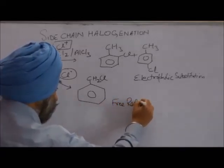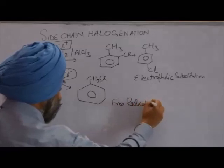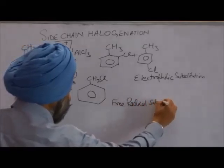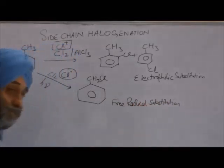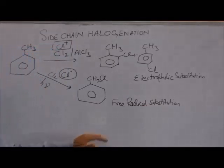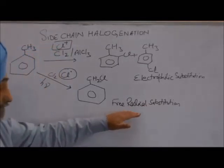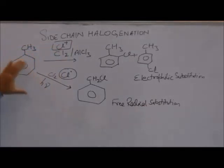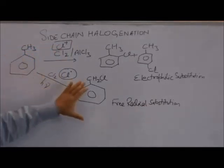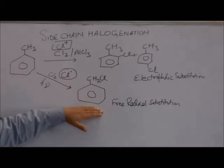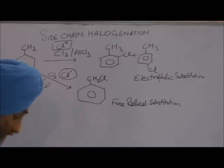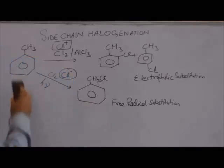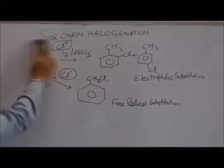Now we will discuss the mechanism of side chain halogenation, or free radical substitution, in toluene. The product formed is benzyl chloride. Now let us discuss the mechanism, which is similar to halogenation of methane.